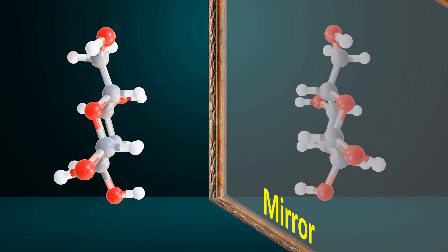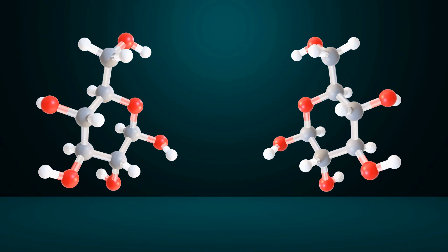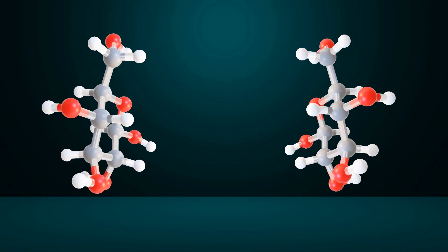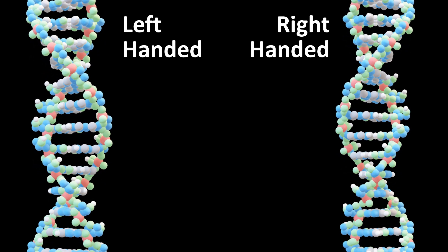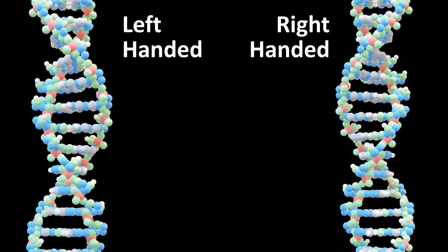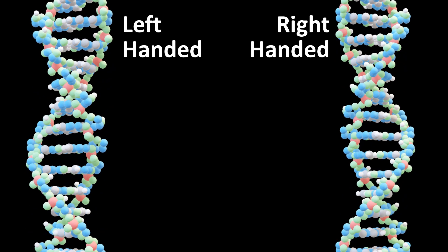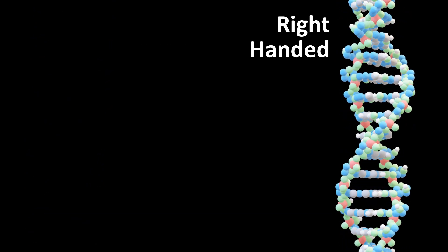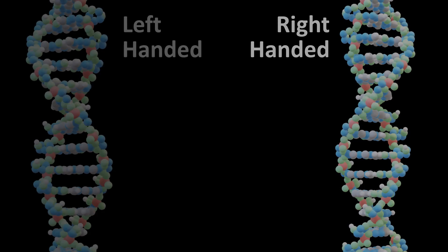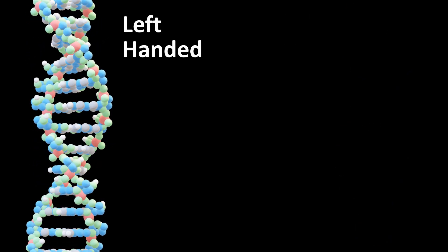Many of the chemical compounds in our body have mirror versions. This means their molecules have left-handed and right-handed forms. For instance, DNA is one such molecule. DNA can exist as right-handed or left-handed. But here is the twist — all the DNA found in life forms on earth is right-handed. There is not a single known organism with left-handed DNA as their genetic material.